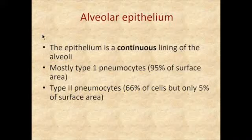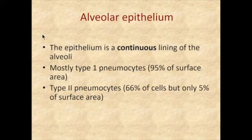The alveolar epithelium contains two cells: a type 1 pneumocyte and a type 2 pneumocyte. Most of them are going to be type 1 pneumocytes.